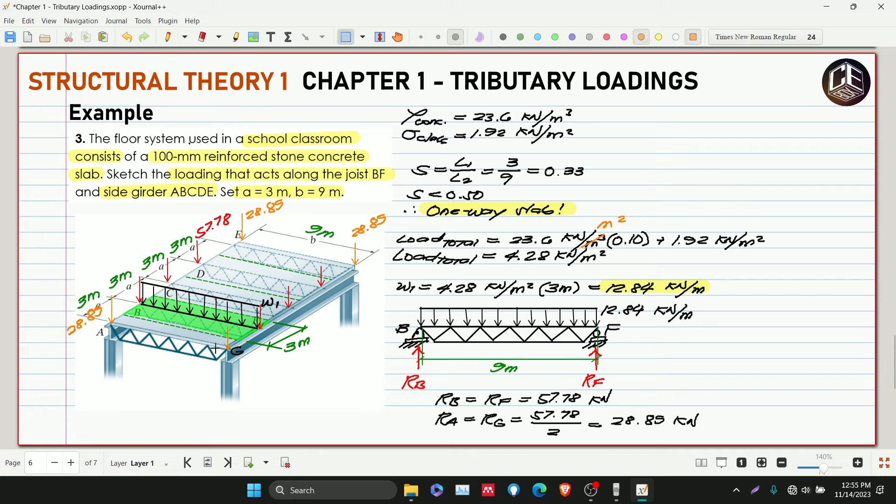When we draw this beam, it's beam ABCDE, the side girder. Drawing the side girder ABCDE. This is our beam ABCDE. This is the plan of the beam.